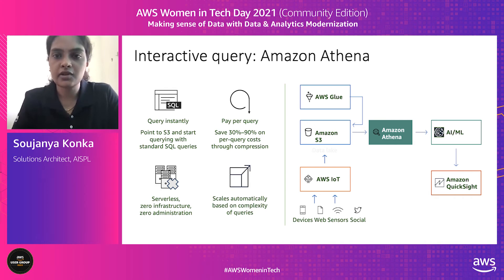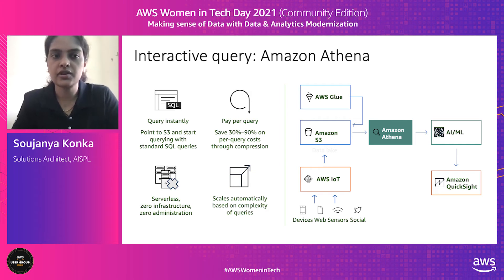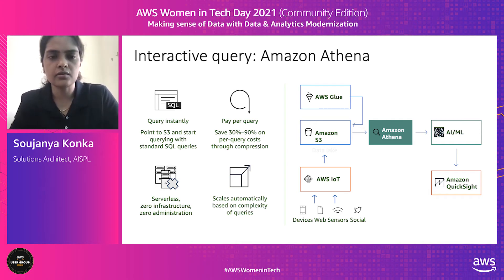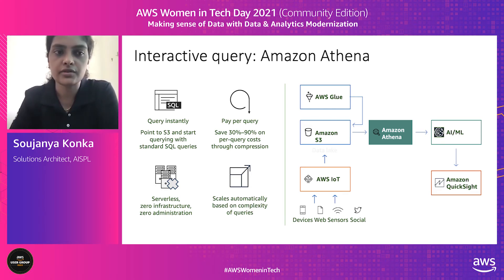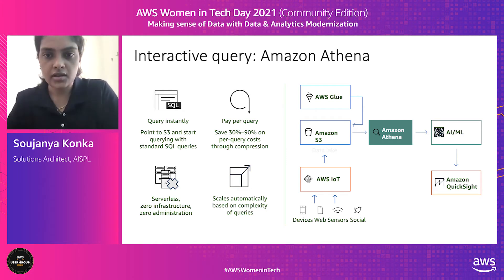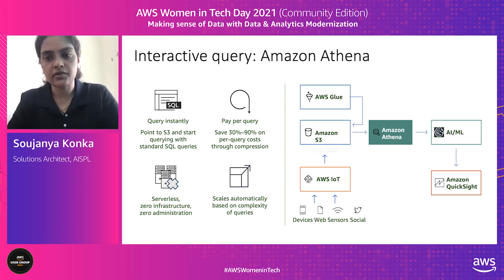Another service in the analytics platform is Amazon Athena — a completely serverless service, managed Presto, which allows you to run interactive queries from data on S3 and any other database available on the AWS platform. It allows what is called federated query — querying data sitting in DynamoDB or RDS or Aurora and combining it with data hosted on S3 using simple SQL joins. It's completely serverless — you just focus on your queries and application logic, no infrastructure to manage, and you pay only for the queries you run, charged on the data scanned per query.